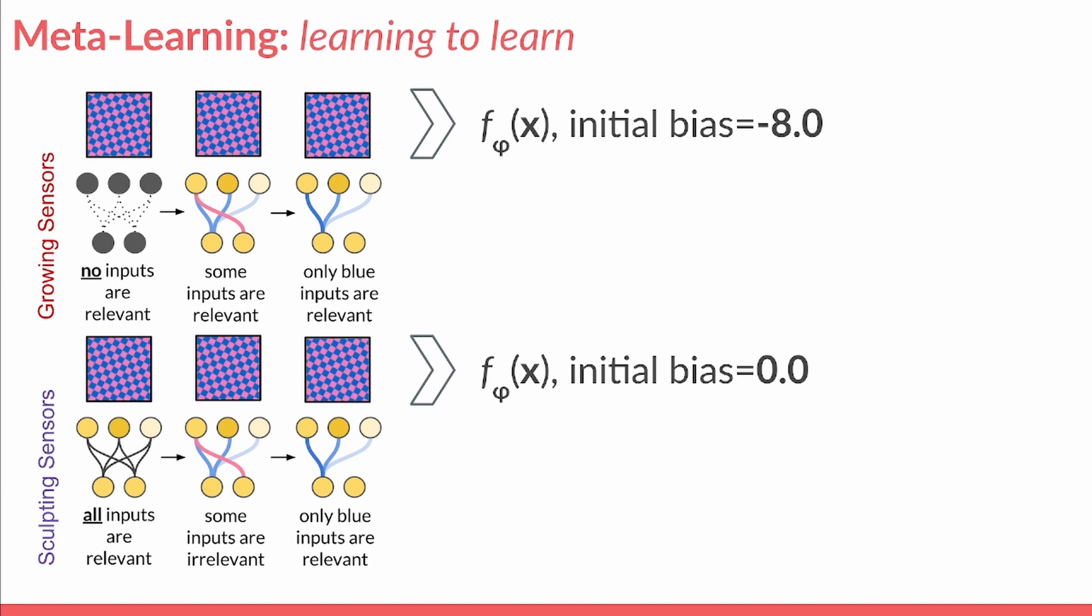Meta-learned regulation will then effectively have to grow sensors in the classifier, but setting the initial bias to the standard value of zero causes initial regulation to be weakly permissive. We then wish to compare regulators which grow and sculpt sensors, respectively.